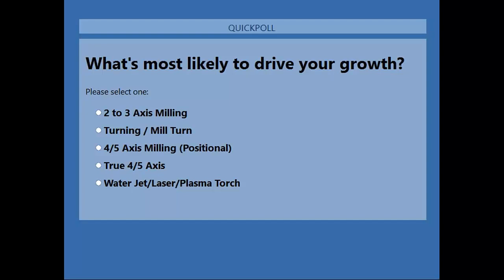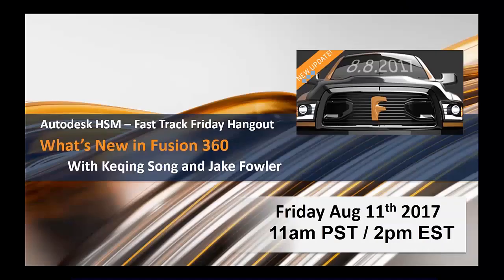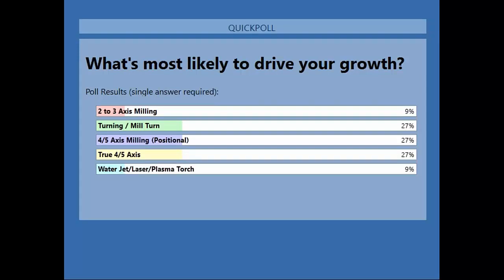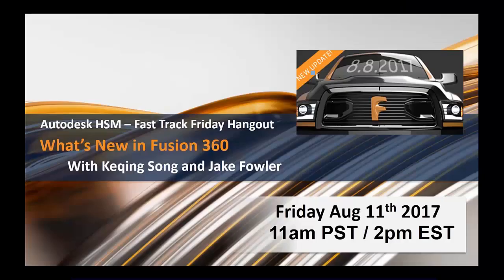It looks like the majority has voted — I really appreciate that. When I close out the polls, I'm going to share that with the team. We have a good split: about 27% across the board looking into growing turning and mill turn, positional and indexing four and five axis milling, as well as true four and five axis. A lot of the audience is already working with some two and three axis milling as well as water jet, laser and plasma. Thanks guys — it helps us know where to focus our content and development.